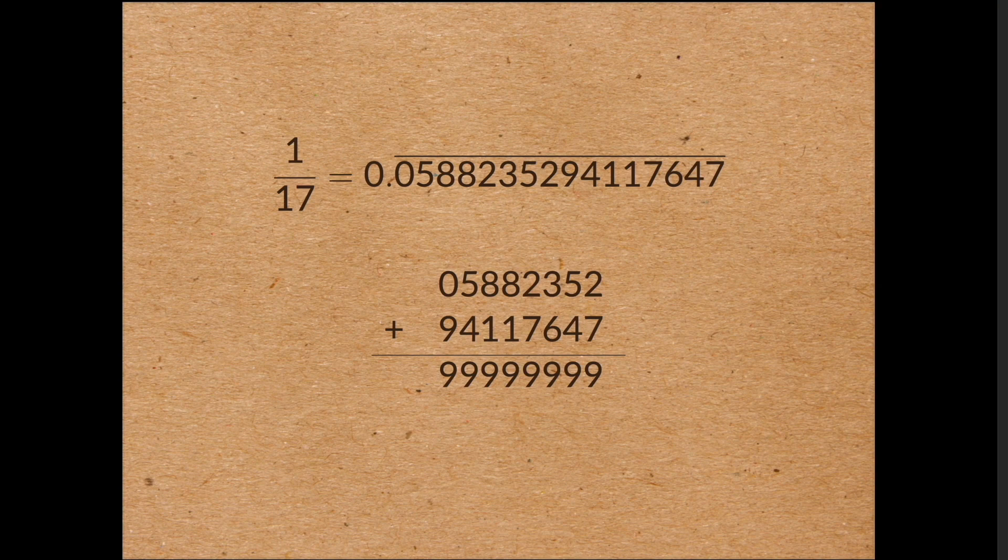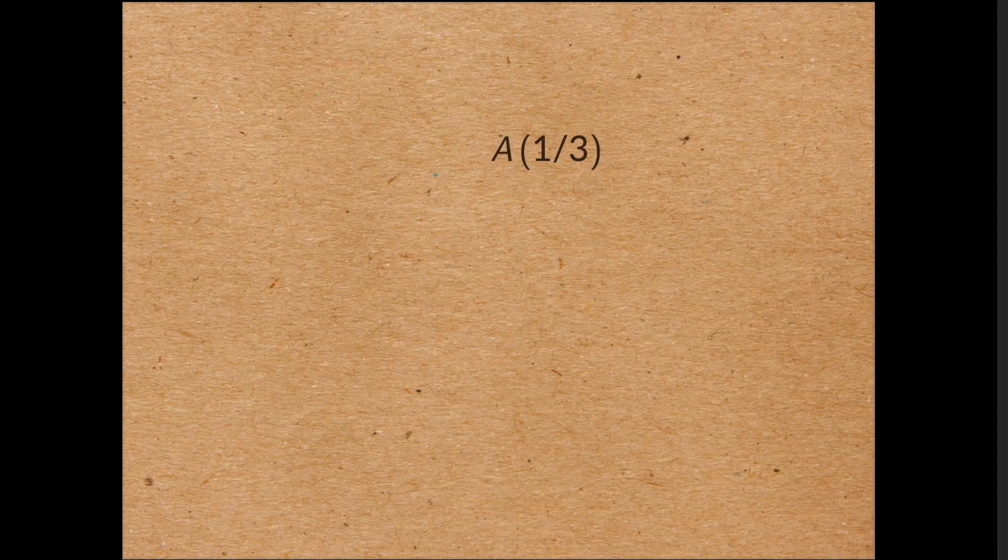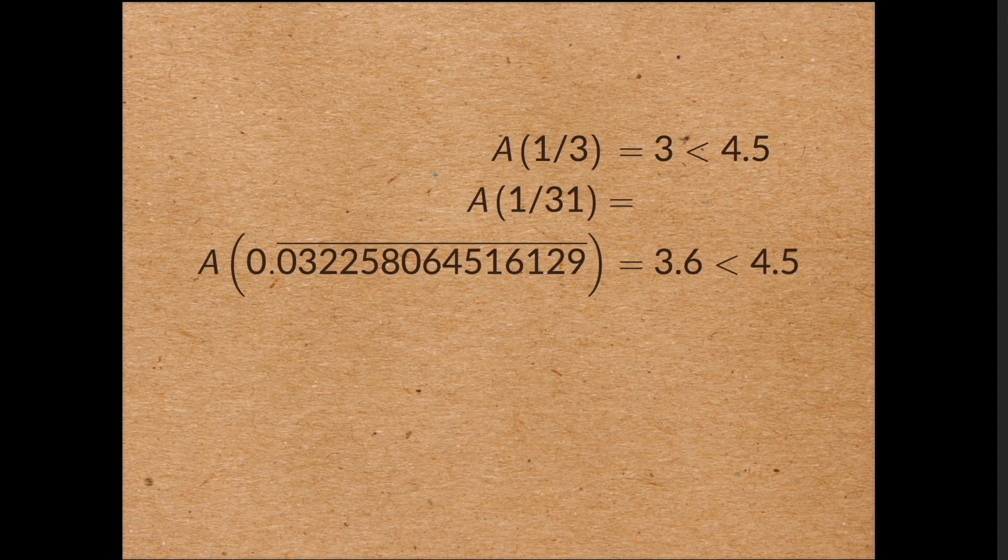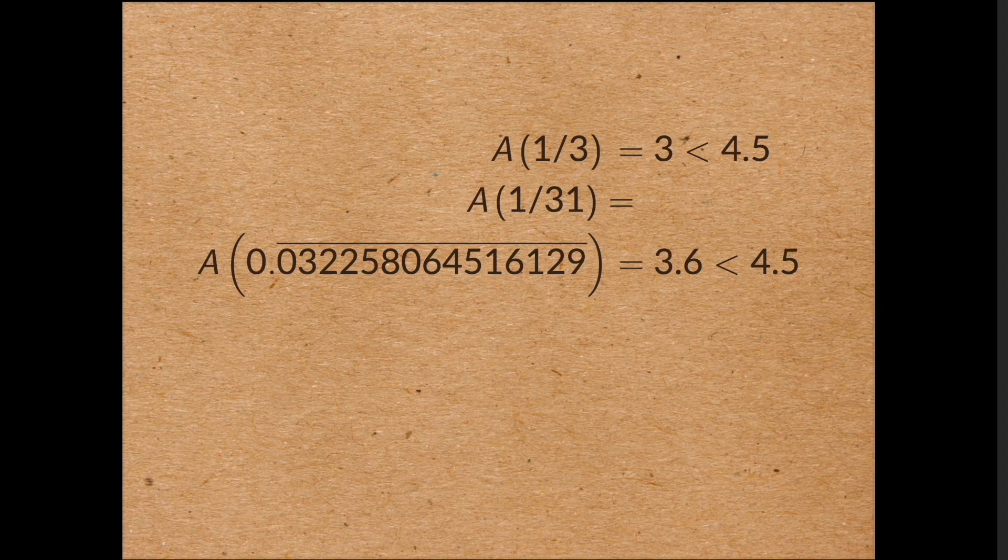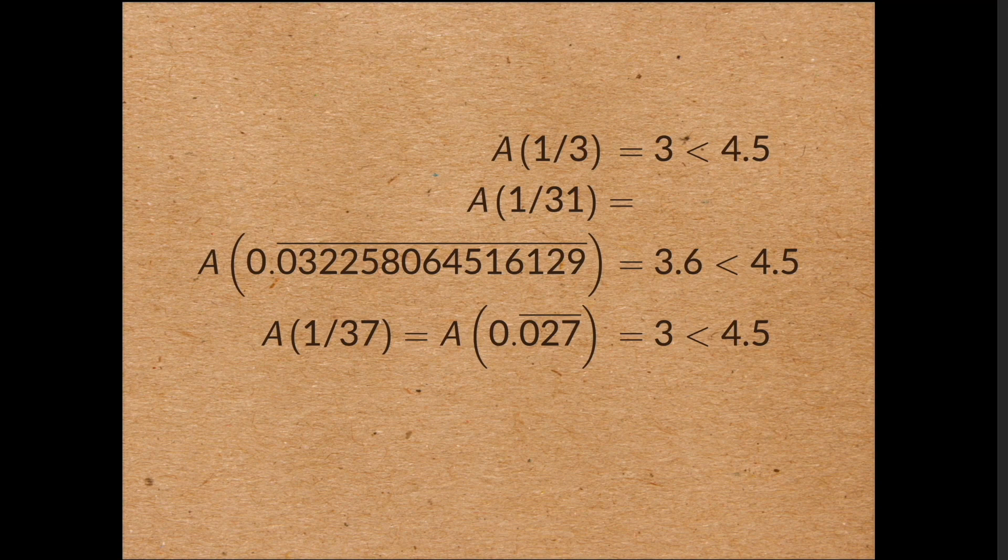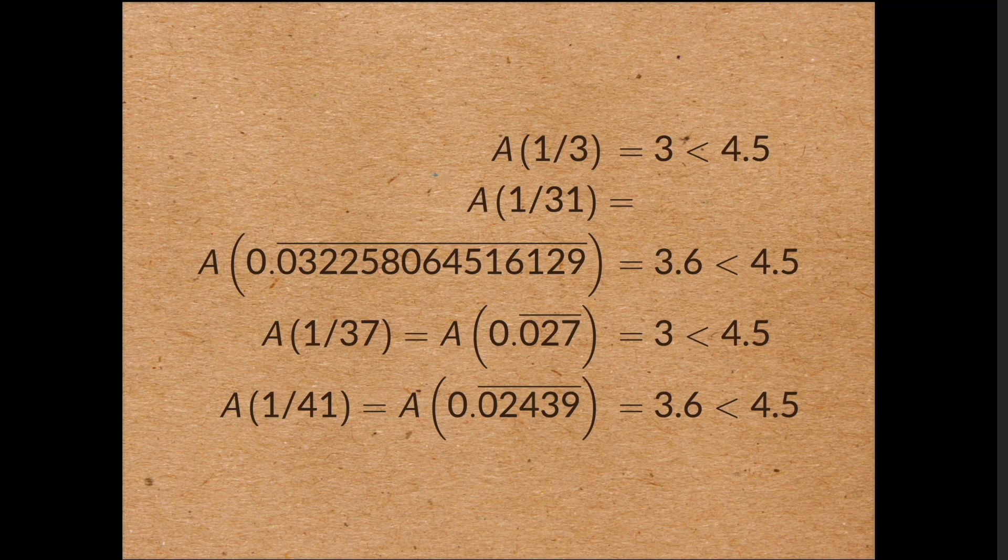So now let's see what happens when the period is odd. A of a third is equal to 3 divided by 1 is equal to 3. A of 1 on 31 is equal to 3.6. A of 1 on 37 is equal to 3. And A of 1 on 41 is equal to 3.6. So these averages are all strictly less than 4.5. But that doesn't last.